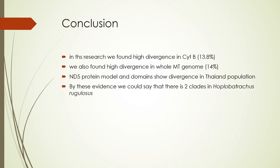This is the conclusion of the research article. We found high divergence in cytB genes of around 13.8% between bred type and wild type. We also found high divergence in the whole mitochondrial genome of around 14%. The ND5 protein model and domain show divergence in the bred type because the ND5 protein is duplicated only similarly, while in the wild type it is duplicated 100% identically. With this evidence, we can say that there are two clades in Hoplobatrachus rugulosus: the bred type and the wild type.